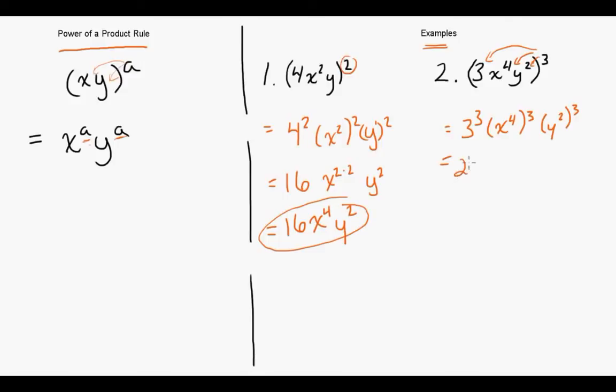3 cubed is 27, x to the 4 times 3, and y squared times 3.